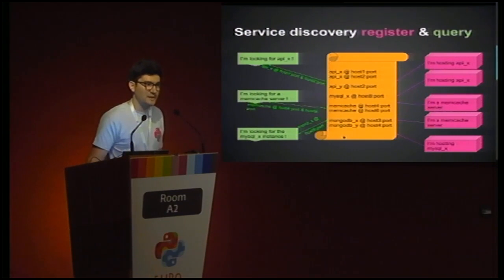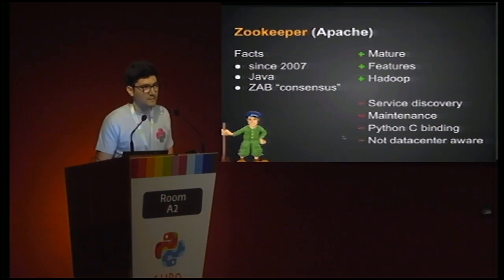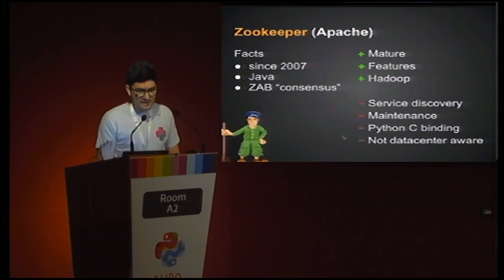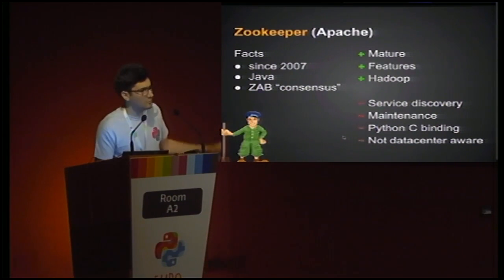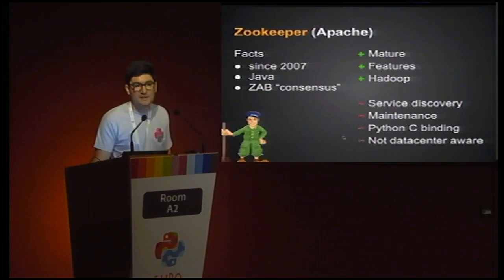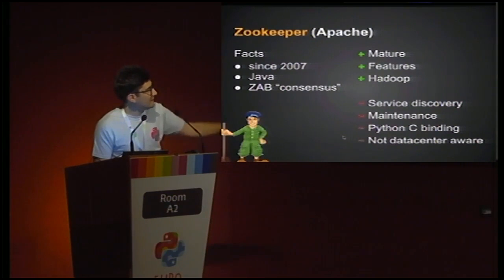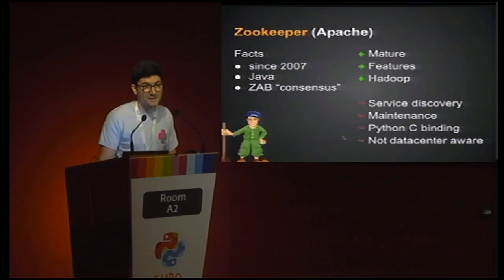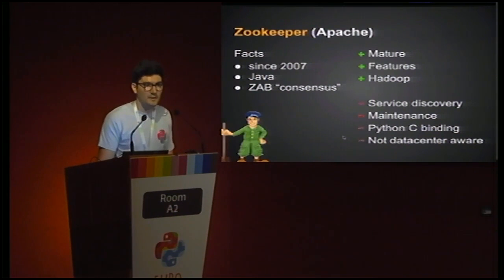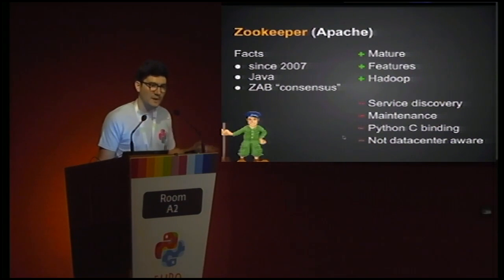Let's take a quick tour of the three technologies. The first and oldest is ZooKeeper, from the Apache Foundation. It's primarily designed as reliable cluster coordination and is used mainly in Hadoop. It has interesting features and is mature. When I say it doesn't provide service discovery per se, that's true — but we'll get back to how we can still use ZooKeeper to achieve service discovery.